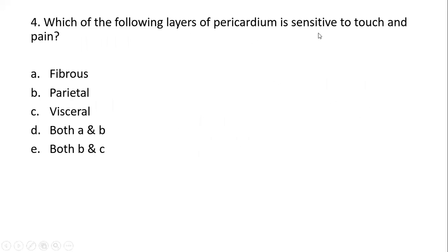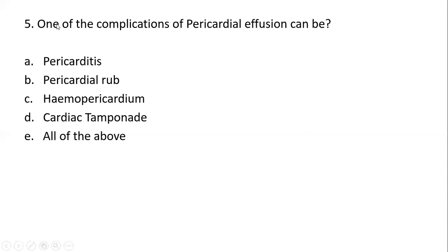Question five: which of the following layers of the pericardium is sensitive to touch and pain? This is a very commonly asked question, not only in MCQs but also in SQs, and a favorite question during viva exams. Pay attention to combined options like 'both A and B' or 'all of the above,' as students sometimes mistakenly choose a single option when a combined option is correct. Read carefully, spending at least 30 seconds on the question and options.